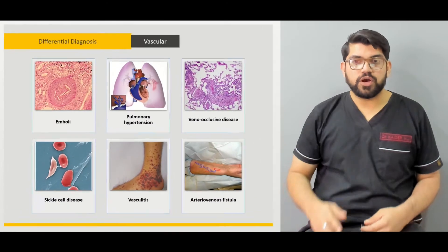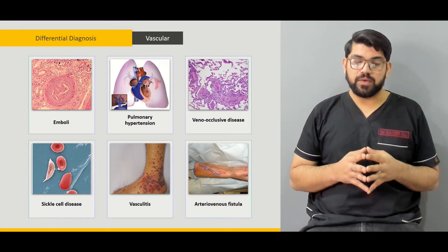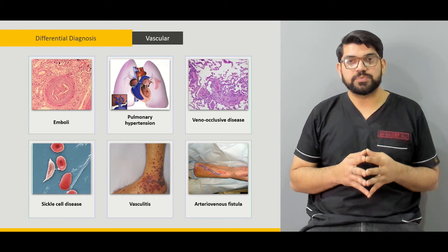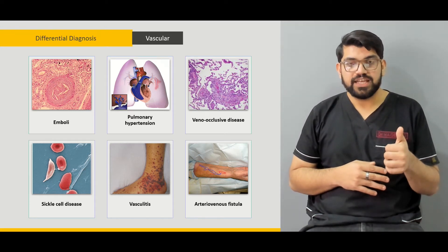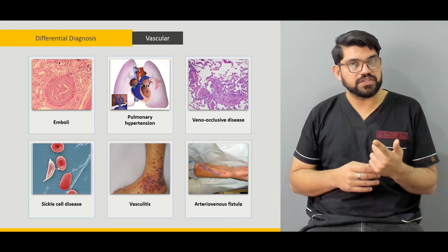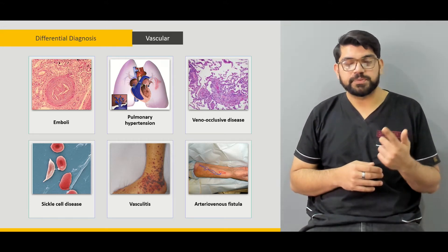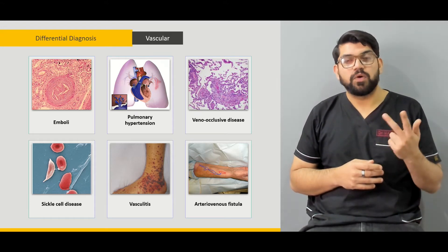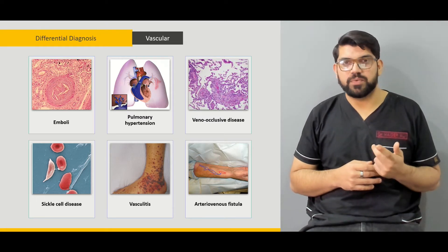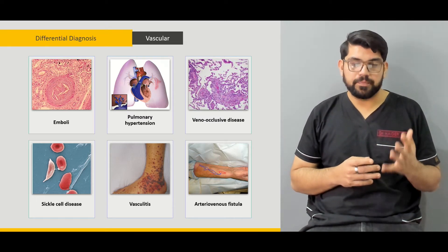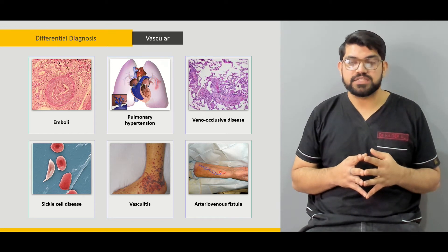First we'll talk about what are the various causes which present with shortness of breath. What are the respiratory causes? Then we'll talk about what are the cardiac causes that present with respiratory compromise or respiratory compromise symptoms. What are the neurological causes that might present with shortness of breath and other symptoms of respiratory compromise?